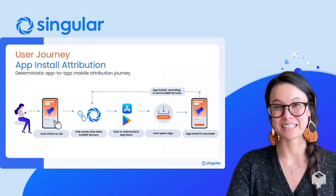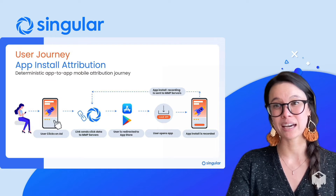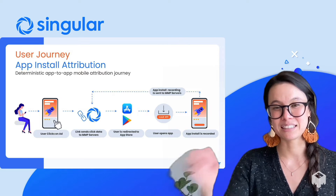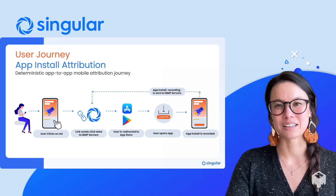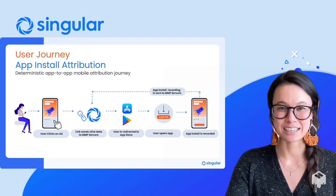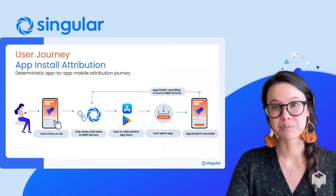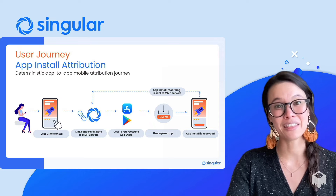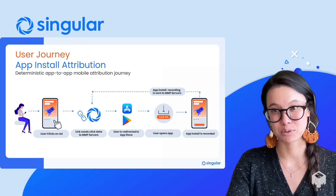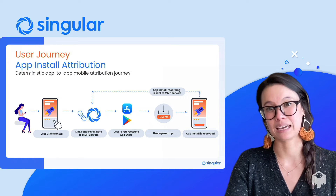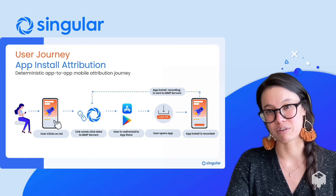Now that we know those two basic definitions, let's take a look at a user's app install journey and how MMPs perform attribution. The example we're focusing on today is a mobile or app-to-app deterministic attribution journey, which is the standard when a device identifier is available. The attribution flow kicks off when the user sees an ad campaign within a mobile app. They're going to click on the ad, and then they're redirected to the relevant app store page. In the background, the MMP is notified of that click and stores the relevant click information for later use.